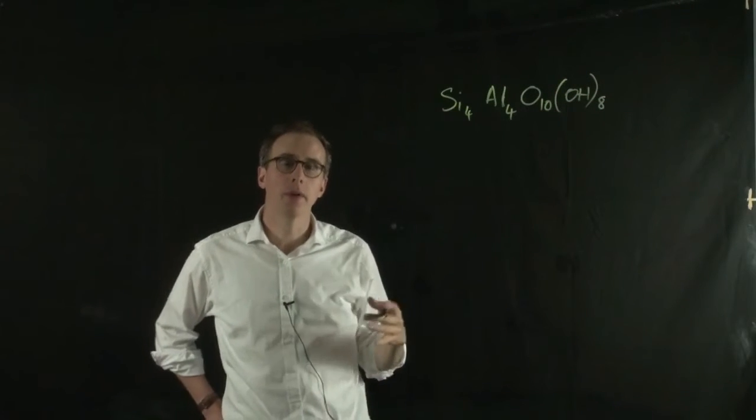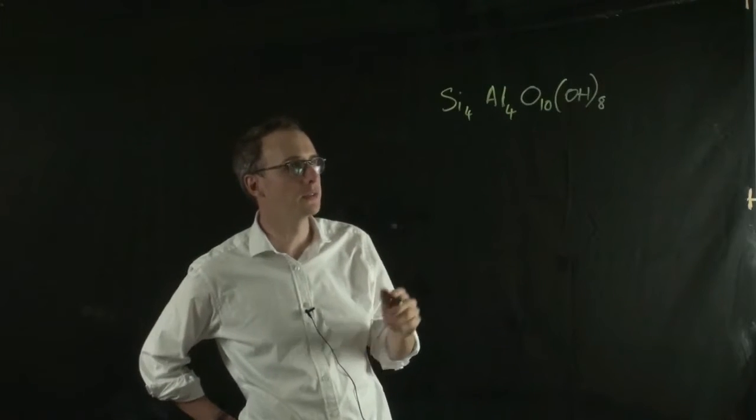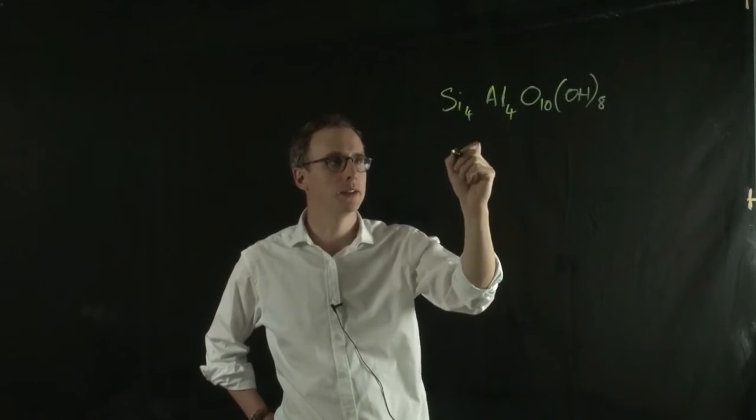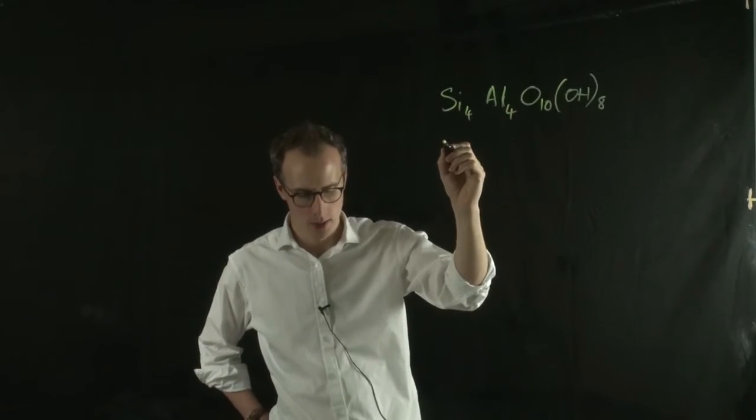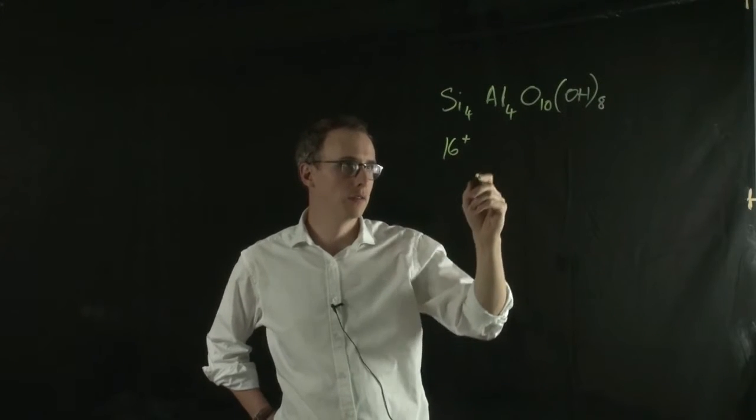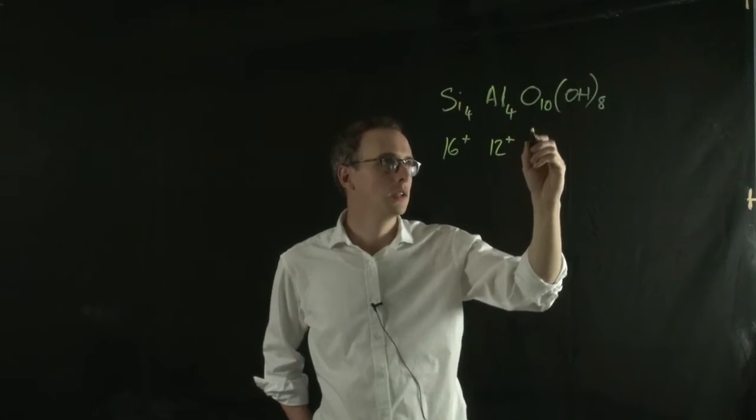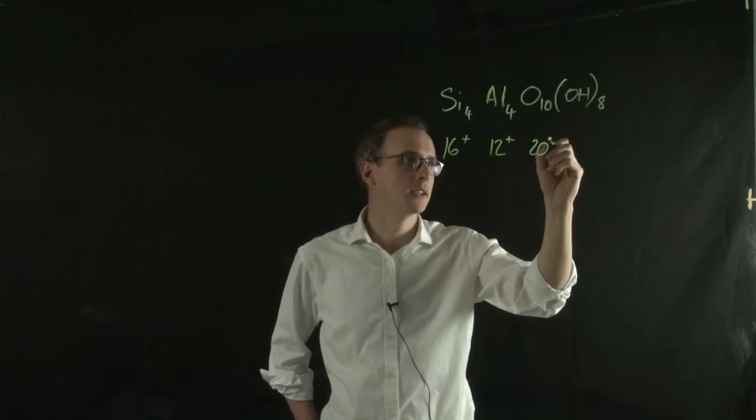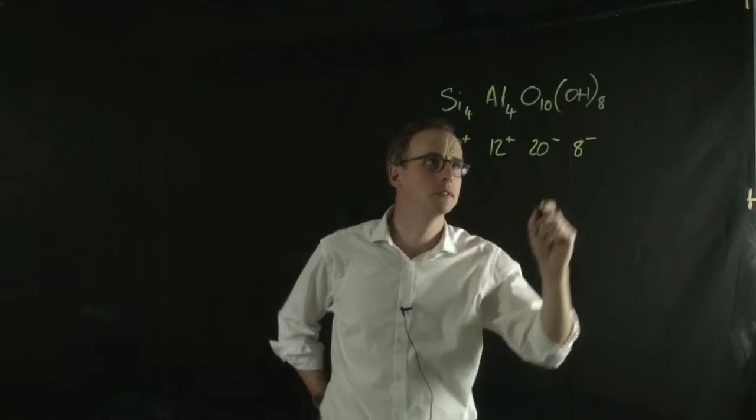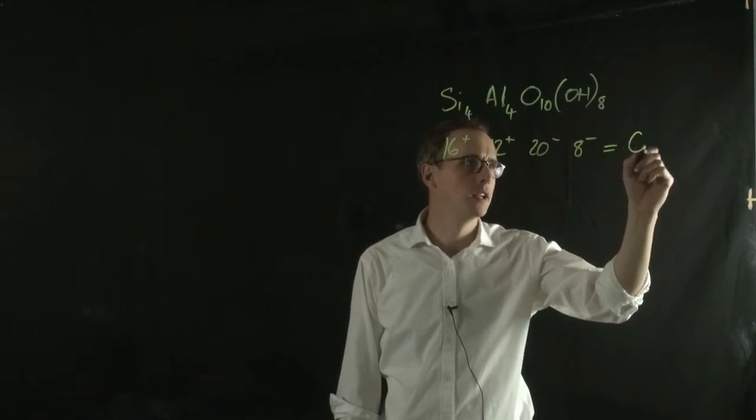And if I count up the chemical charge in each of these atoms, we have 4 silicon, which should give me 16 positive; 4 aluminum, which gives me 12 positive; 10 oxygen, which is 20 negative; and 8 hydroxyl, which is 8 negative. If I count those up, you'll see that actually the net charge is zero.